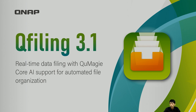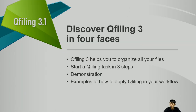Let's go to the slide. We have QFiling updated to the latest version 3.1. In this version, we have some important new features which are real-time data filing, and we also integrate with our AI engine QMatch Core to support automatic file organization. Today I'm going to introduce QFiling 3 in full — first, how QFiling 3 can help you organize all your files, and second, how to start a QFiling task in three steps.